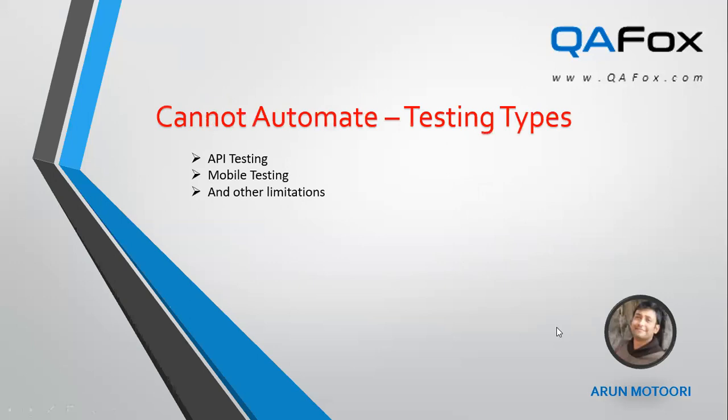Now, what can Selenium NOT automate? First is API testing. Selenium is not the correct tool for API testing. For API testing, you should use other dedicated tools like Rest Assured framework, SOAP UI, SOAP UI Pro, or Postman. These tools are specifically intended for API testing automation, and Selenium is not the right fit for it.